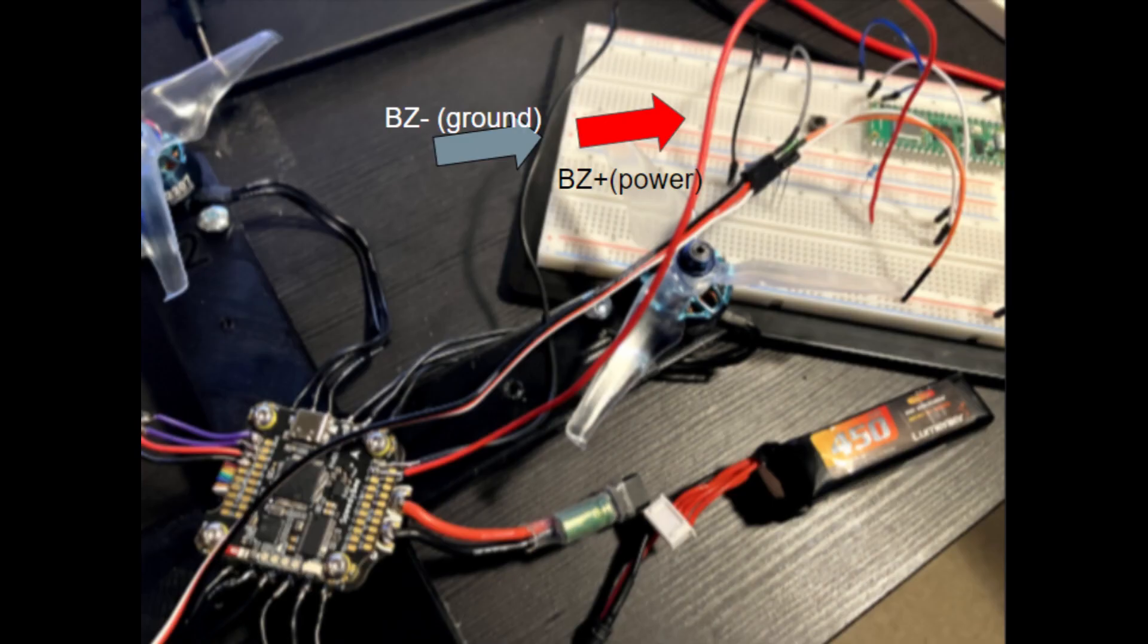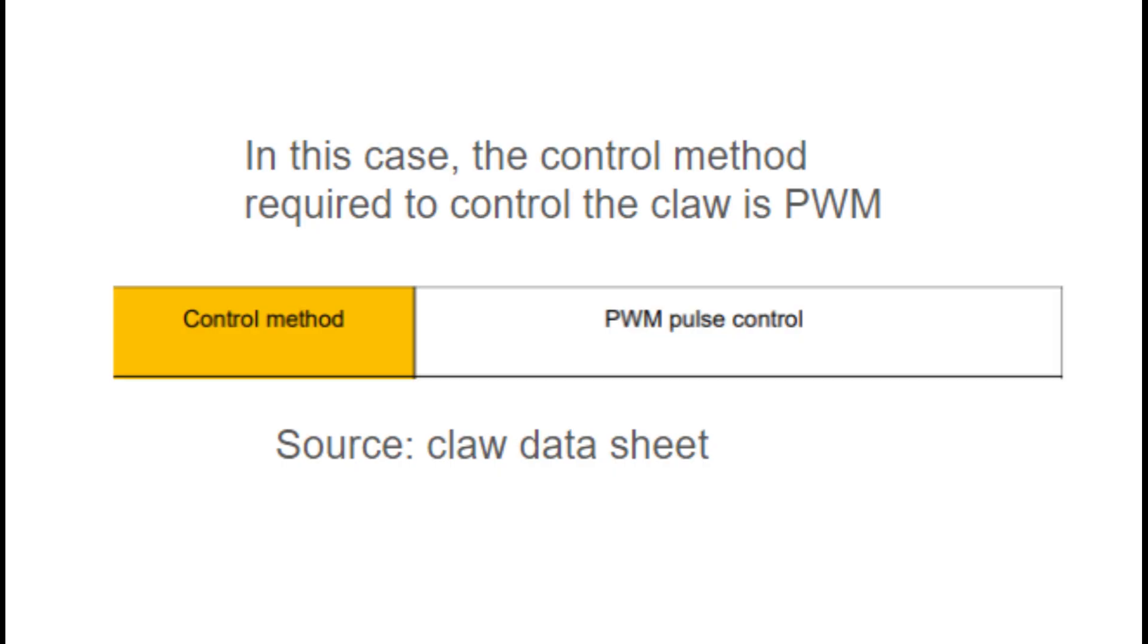I attached the two wires coming out of my flight controller into a Raspberry Pi pin that I coded so that when it receives a signal it transmits a PWM signal to control the claw itself.